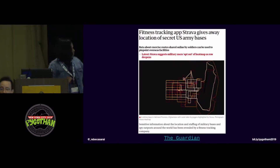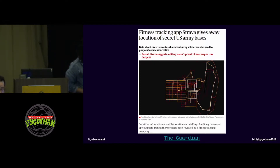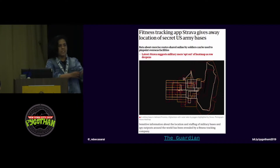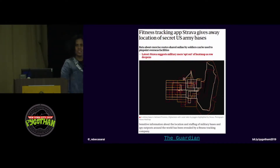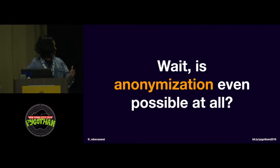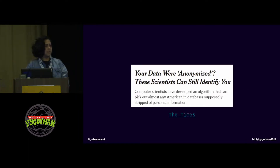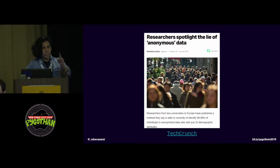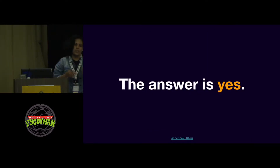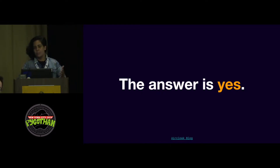Another example: this picture shows a map of a US military base in Afghanistan — we should not see this. But soldiers in the field like to run a lot, and they use fitness trackers. This fitness tracker data went online and was published. The data is not personal because there's no user information, but there is location information, and this is a secret location. You might be thinking: is anonymization even possible? There are a lot of articles saying you're not safe, but in this talk I want to show you that it is possible, with a few exceptions.